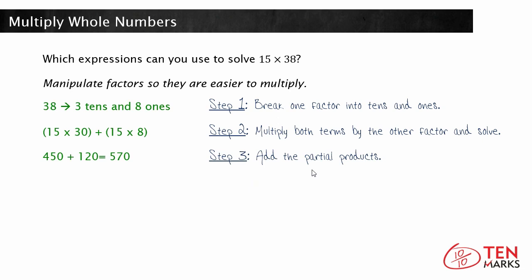You are now going to add the partial products, so 450 plus 120 equals 570. The product of 15 times 38 is 570.